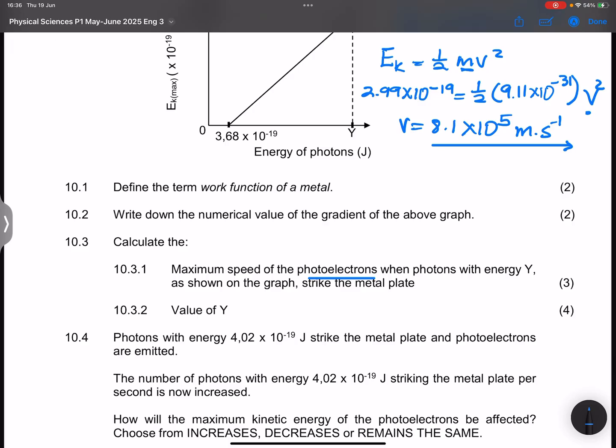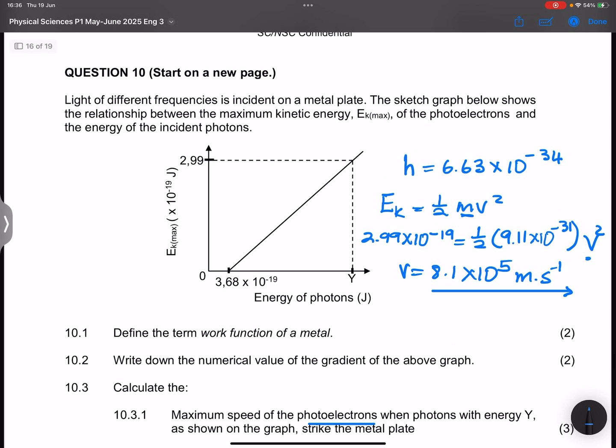They say calculate the value of Y. So remember, Y would be the energy of the photon, and how do we get that? We know that the energy of the photon would be equal to the work function plus Ek max.